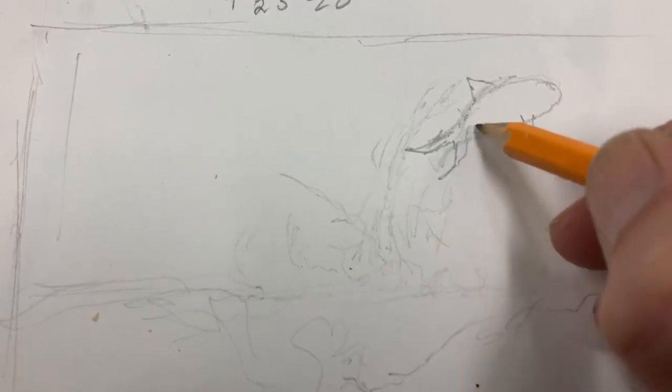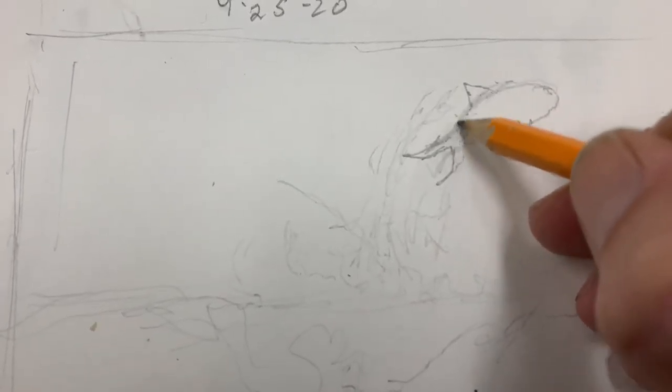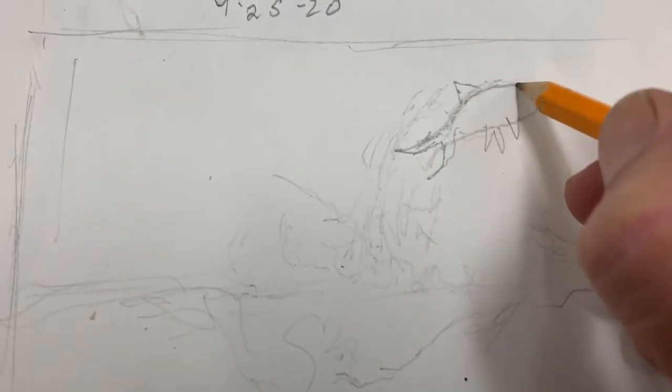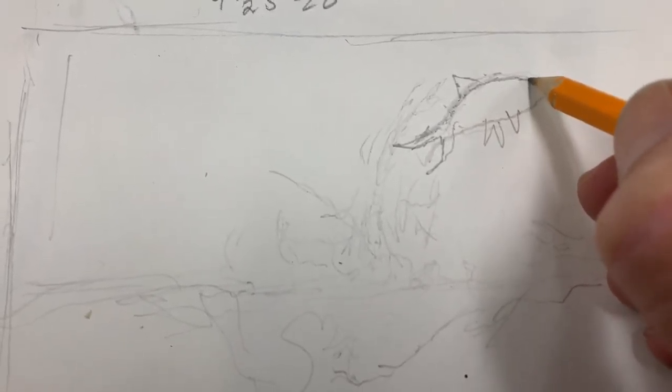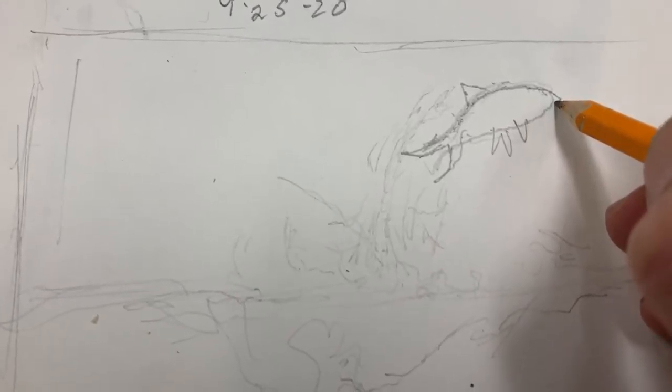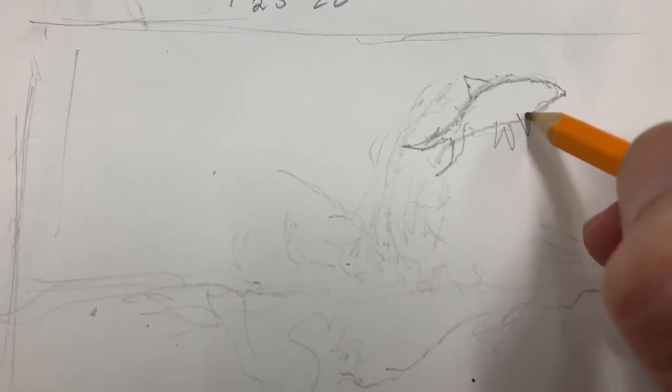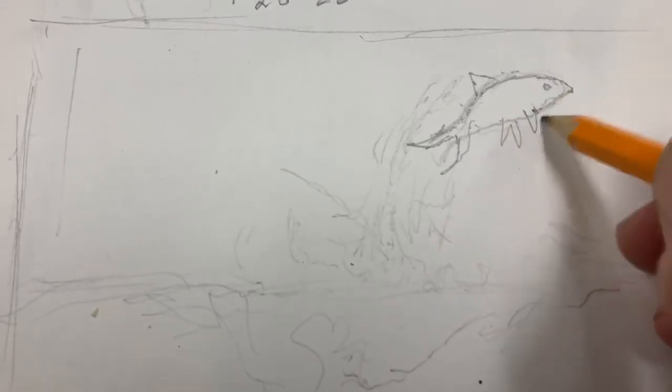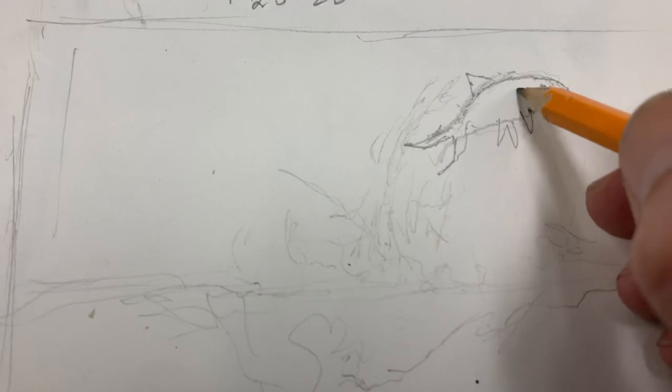Kind of like this. Gotta forgive Mr. Middleton, this is my first drawing of the morning. Then we're going to go along that shape line and we're going to refine it and make it closer to what we actually see. That's where that eye is right here. There's the gill.